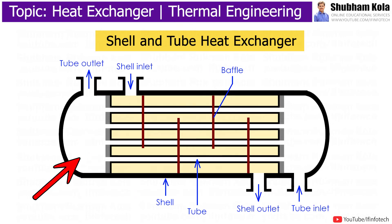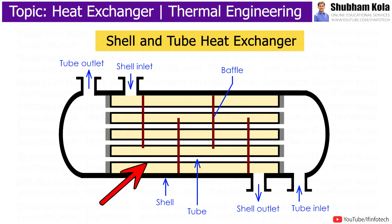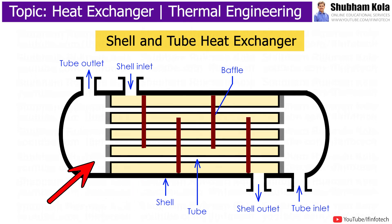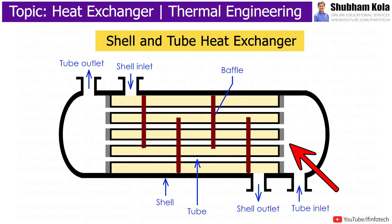Shell and tube type heat exchanger is designed with a number of tubes placed inside the cylindrical shell. All the tubes within the shell are collectively termed as tube bundles. Each tube passes through a series of baffles and tube sheets. One of the tube sheets is fixed and one is free to move.